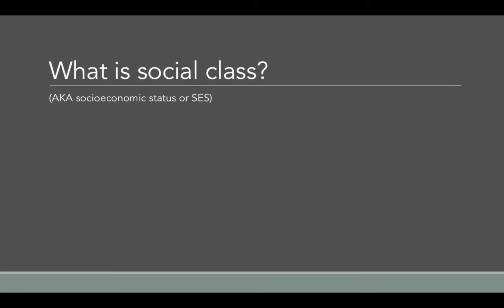Let's first talk about what social class is. In sociology, we use this term somewhat interchangeably with socioeconomic status, or SES for short. The difference is that social class refers to discrete groups, while socioeconomic status assumes people fall somewhere on a continuum. The idea is the same, and the distinction is not super important for what we're doing, but just know those terms are used interchangeably.